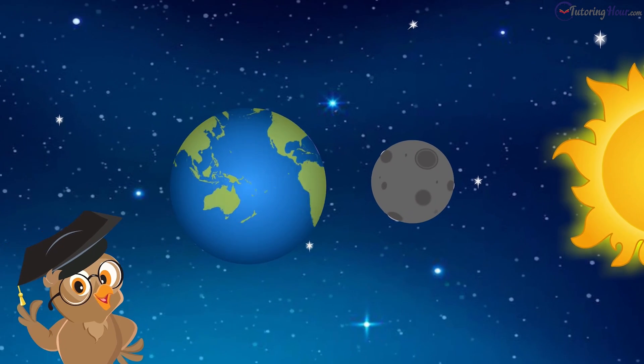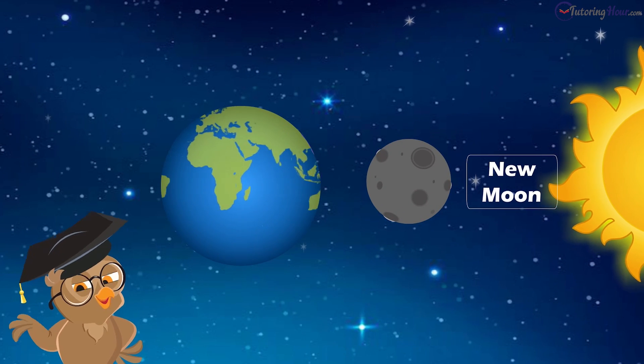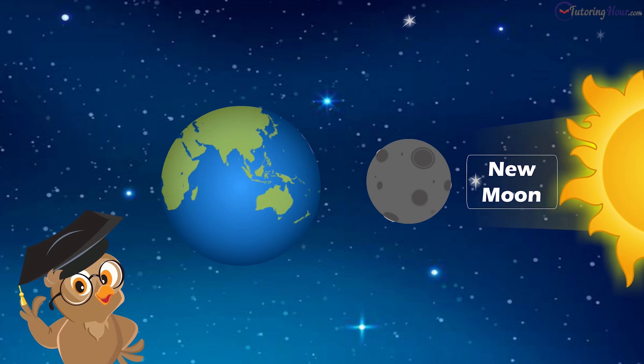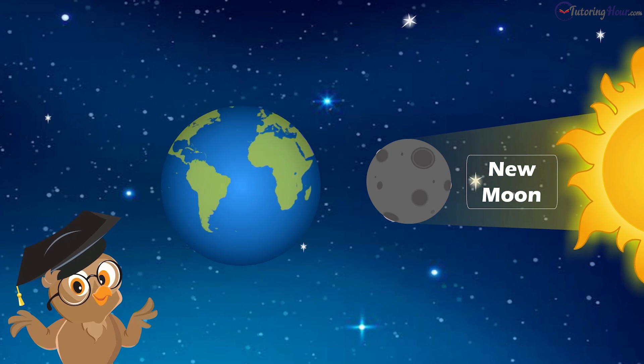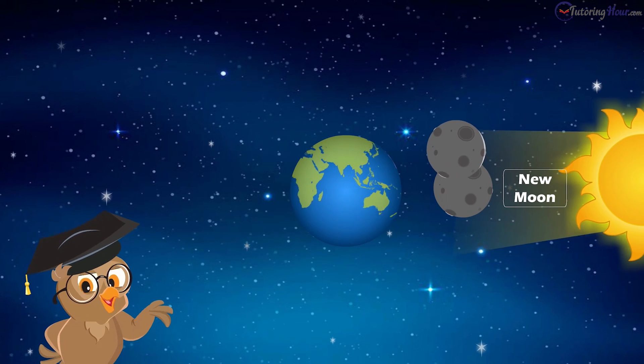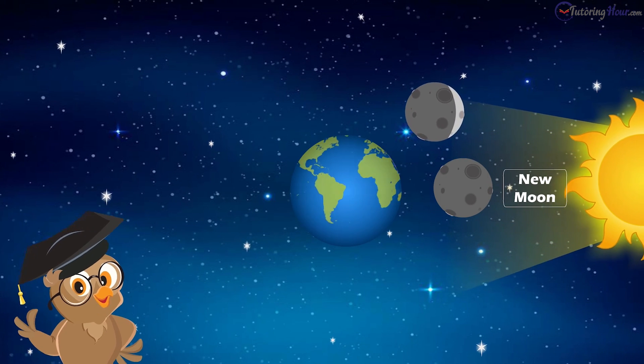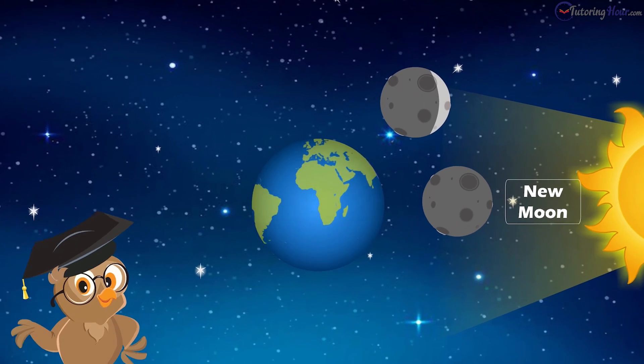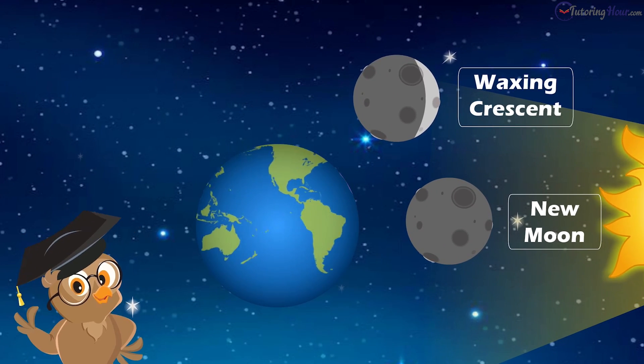The first phase is the new moon. In this phase, the moon appears completely dark, because the unlit side of the moon is facing the earth. After a day or two, a thin sliver or crescent of light is seen. This is the second phase, and we call it the waxing crescent.